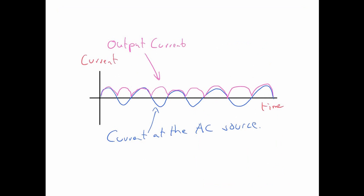And this is what the output current would look like compared to the input current. So we've got the current at the source, and the blue line, that's going forwards and backwards, whereas the output, it's only going in the forwards direction.